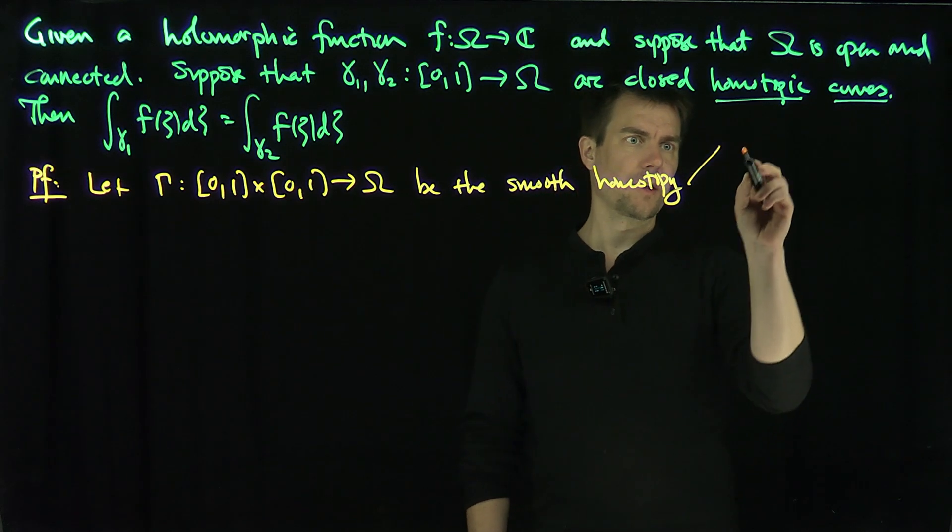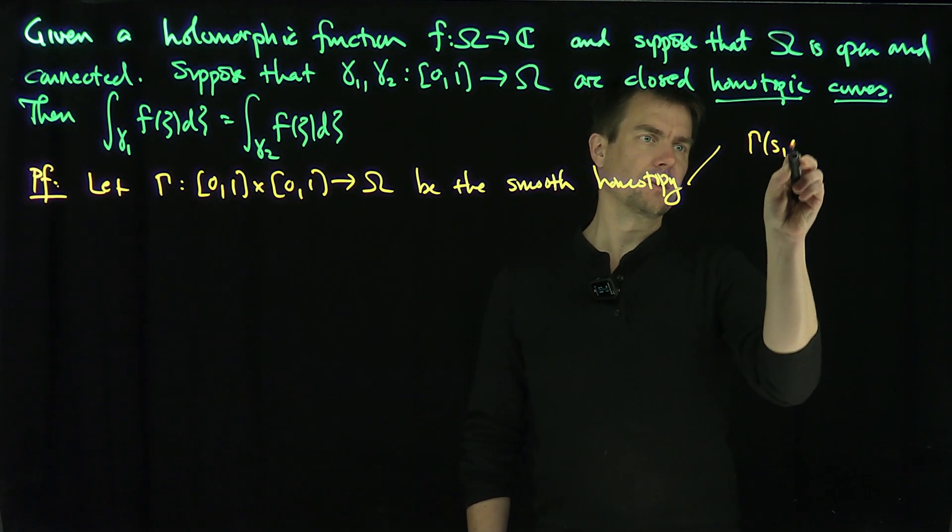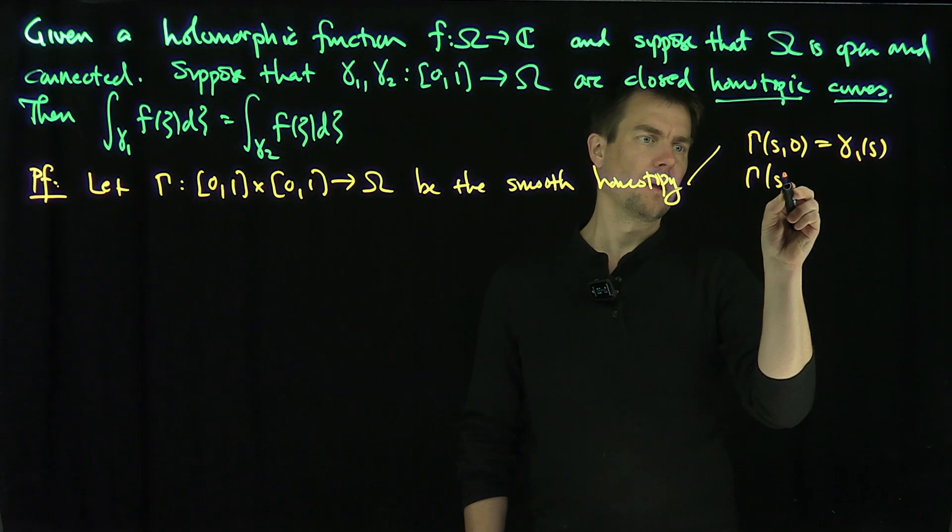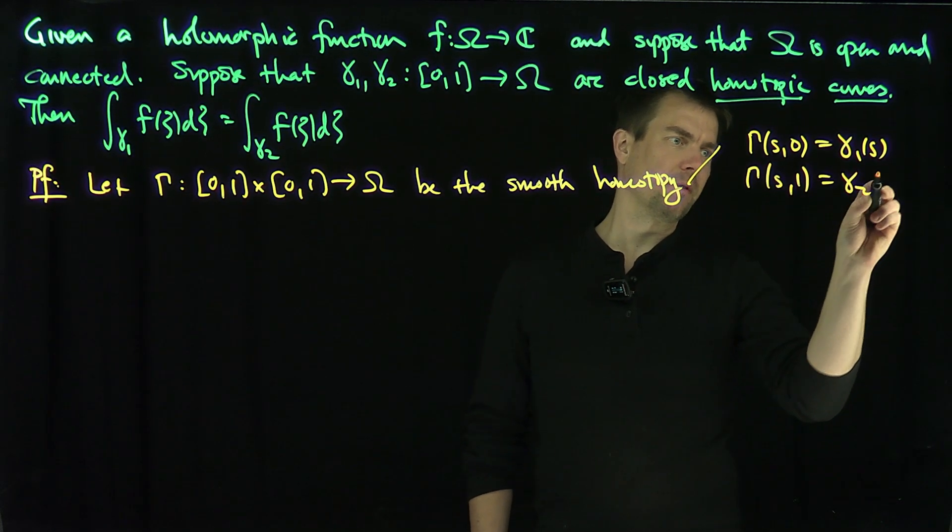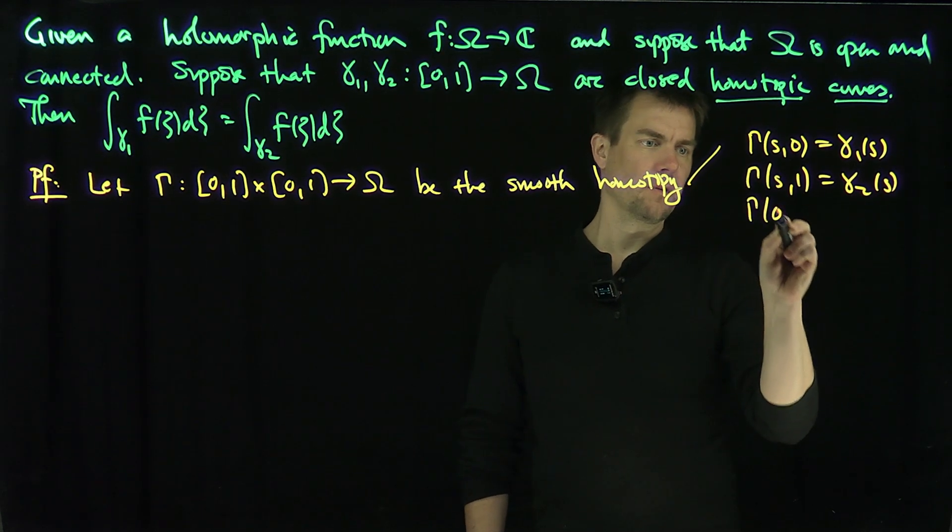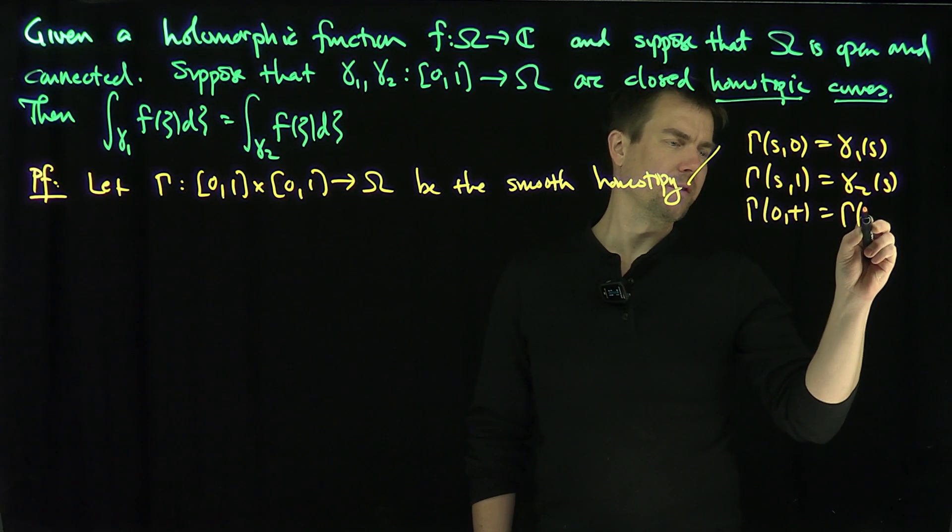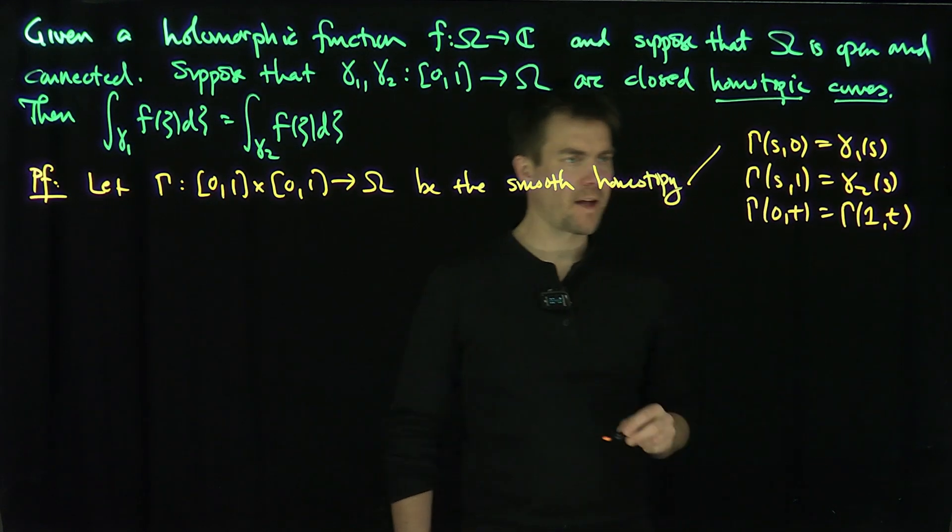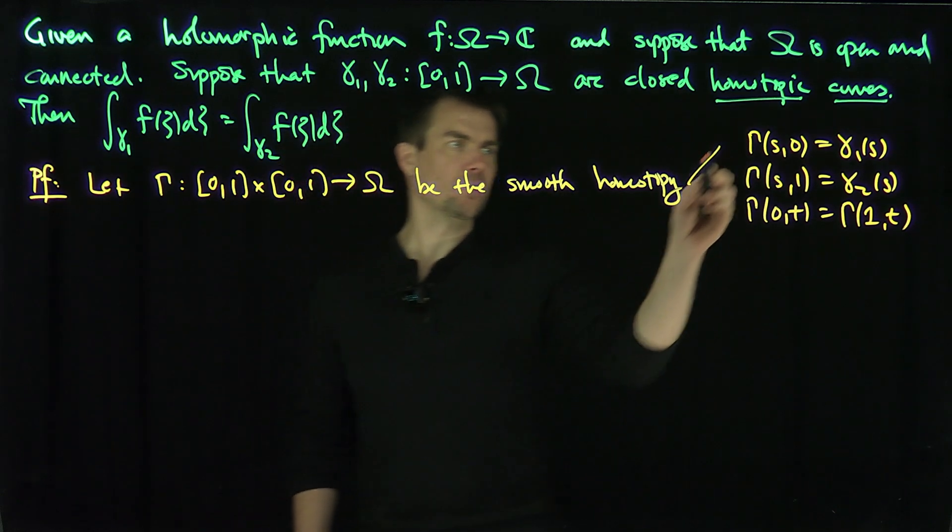So what do we have with this? We have three conditions. We have that gamma of (S,0) is equal to gamma1 of S. We have that gamma of (S,1) is equal to gamma2 of S. And we have that gamma of (0,T) is equal to gamma of (1,T). Those are the three conditions for homotopy.